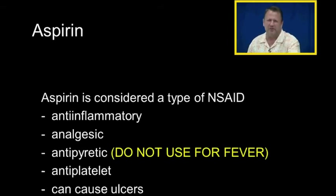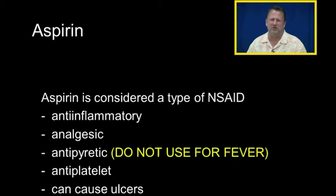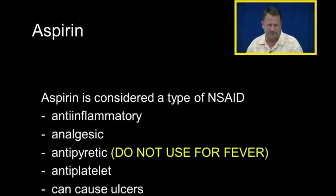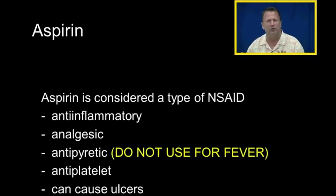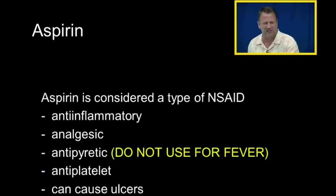Aspirin is also considered a type of NSAID. It has anti-inflammatory, analgesic, antipyretic, and anti-platelet properties, and can cause ulcers as well. Please do not use aspirin for fever because it can cause Reye's syndrome — we do not want to use aspirin for fever anymore. Aspirin has these properties because it is a prostaglandin synthesis inhibitor.